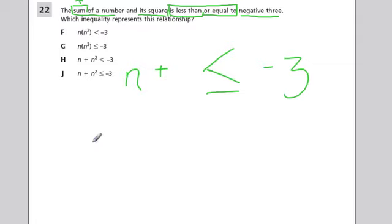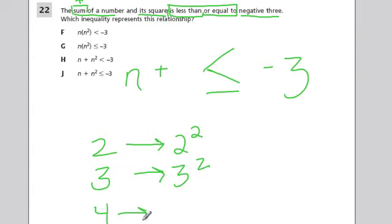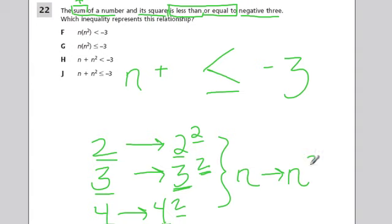Let's say the number was 2, what would the square of 2 be? That would be 2 squared, the second power, and that's 4. If we had 3 the square would be 3 squared, if we had 4 it would be 4 squared. So any number we take, whether 2 or 3 or 4, the square is just that number with the exponent of 2. For n, the square would be n squared, n to the second power. So we have n, some number, and its square is less than or equal to negative 3, which is exactly what we have here for j.